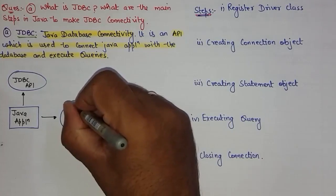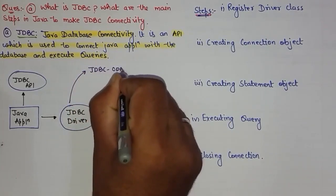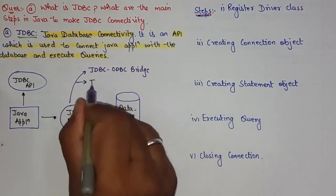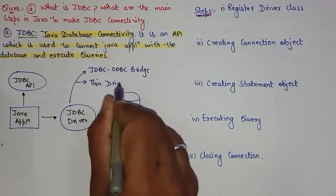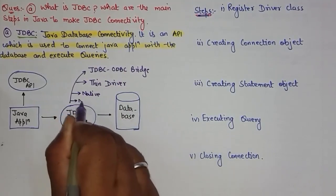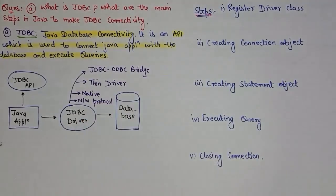There are different types of JDBC drivers: the JDBC-ODBC bridge driver, the thin driver, the native driver, and the network protocol driver. Now we will see the five steps to connect with JDBC.